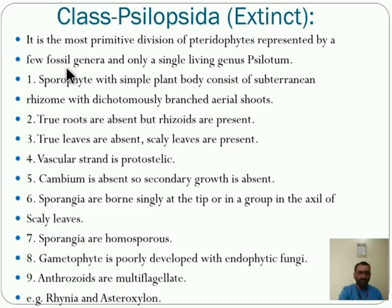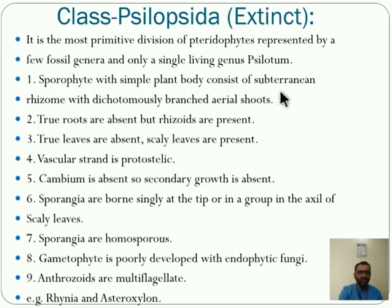Let us see the characters one by one. First one is the sporophyte with simple plant body — teridophytic plant body. In Psilopsida, the plant body is sporophytic and consists of a subterranean rhizome — it has rhizome, not roots — with dichotomously branched aerial shoot. This is the primitive one, showing evolution.